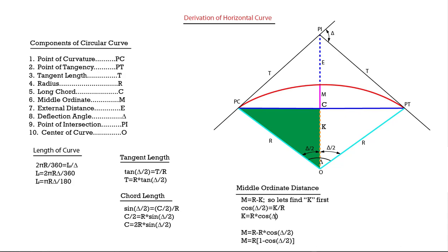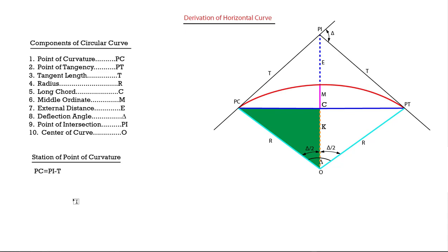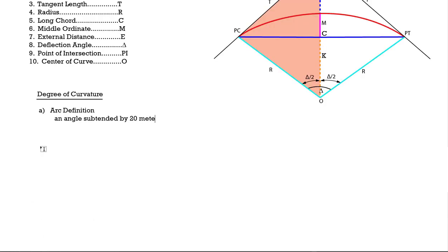The station of the point of curvature PC equals the PI station minus the tangent length T. The station of the point of tangency PT is calculated from the PC station plus the curve length. The tangent length is the station at the point of tangency.